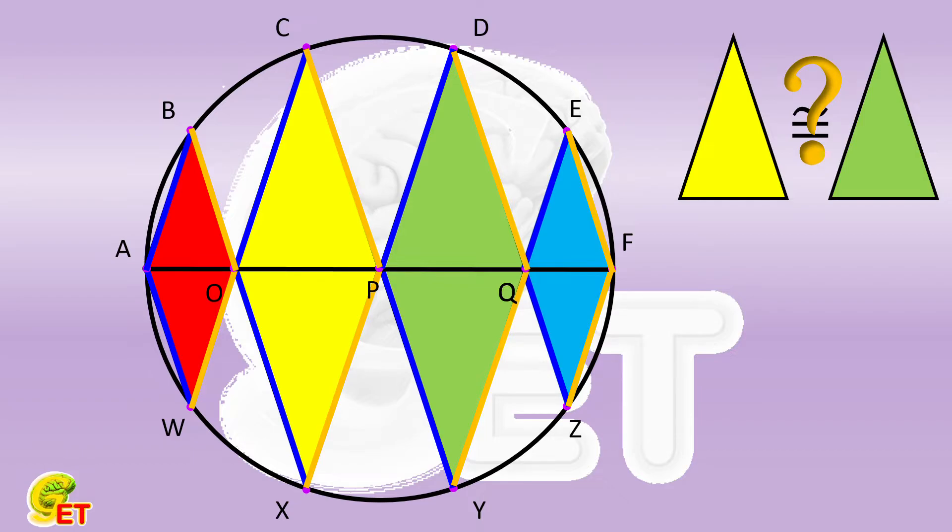The isosceles triangle ABO and their symmetrical triangle AWO are put together to construct a rhombus. The opposite sides WO and AB of this rhombus must be parallel to each other.